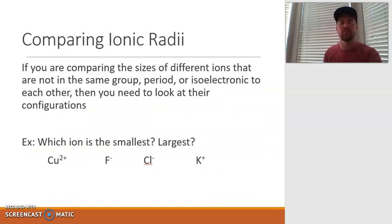So let's look at some examples. If you are comparing the sizes of different ions that are not in the same group period or isoelectronic to each other, then you need to look at their configurations. In other words, if all the trends we've been talking about up to this point don't work, then you need to look at the electron configurations. Here's what I would do. If I was looking at this set of four ions and asked to define which one is smallest and which one is largest, here's a way you could do it. The first thing I notice is that I have two cations. I'm going to use my trend to figure out which of those two are the largest. And then I'll do the exact same thing with my two anions.